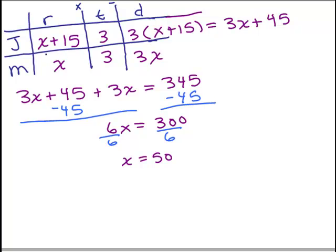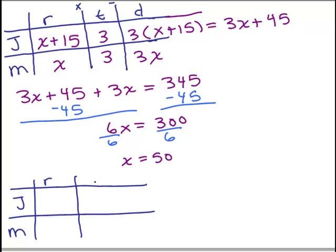All right, so what we're going to do is take this chart we have, and we're going to check and make sure everything in there makes sense. So we have John, we have Maria, we have their rate, which now we're going to be able to put in the actual number, their time, and their distance. Again, rate times time equals distance. All right, so now that I know what x is, I could put that in for Maria's rate. That's 50. And John's rate was 15 miles per hour more, which is 50 plus 15, which is 65.